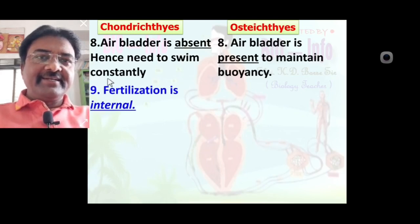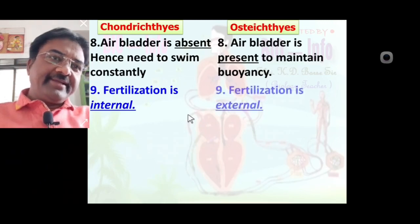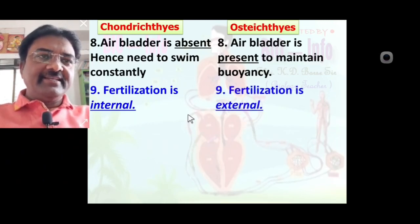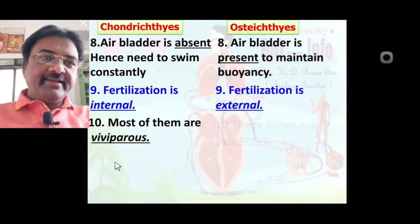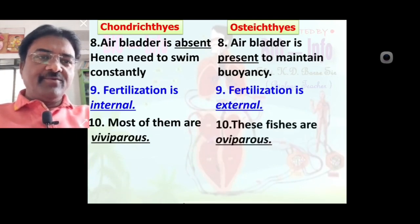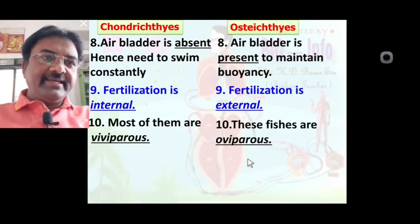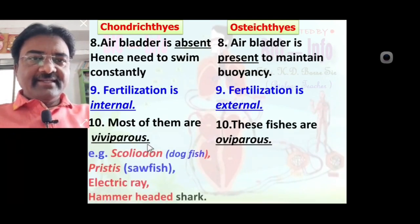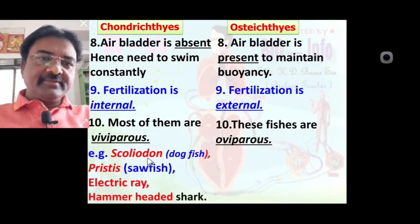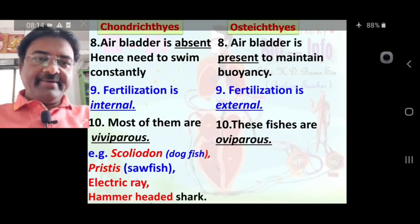Ninth character: fertilization is internal in Chondrichthyes fishes, while fertilization is external in Osteichthyes fishes. Most Osteichthyes fishes are oviparous.